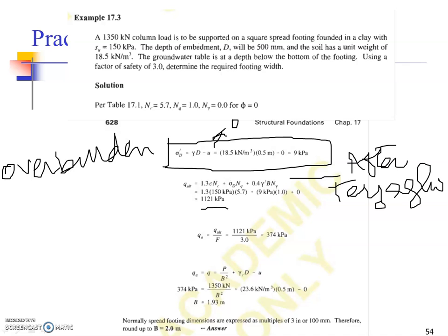For the square foundation, you need to use the shape factors as well. The ultimate bearing capacity turns out to be 1121 kilopascal. The factored bearing capacity, called allowable bearing capacity, turns out to be 374 kilopascal.